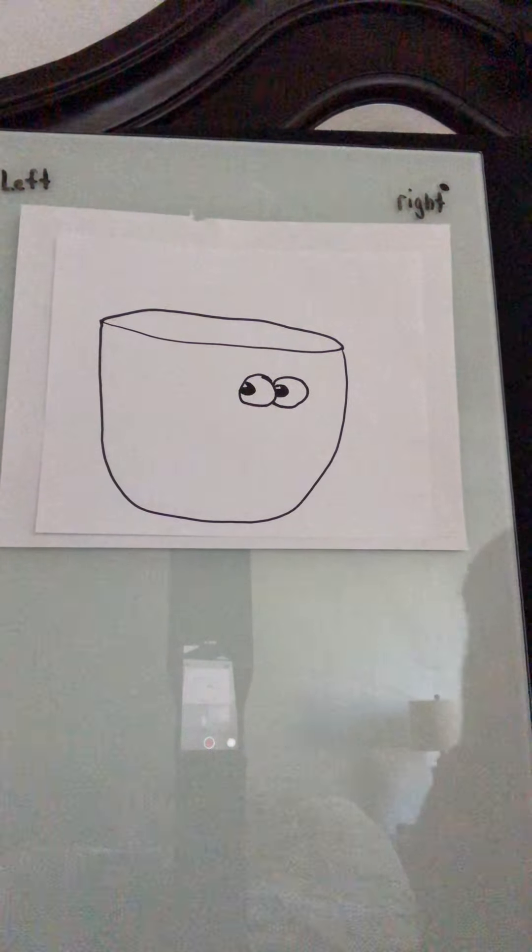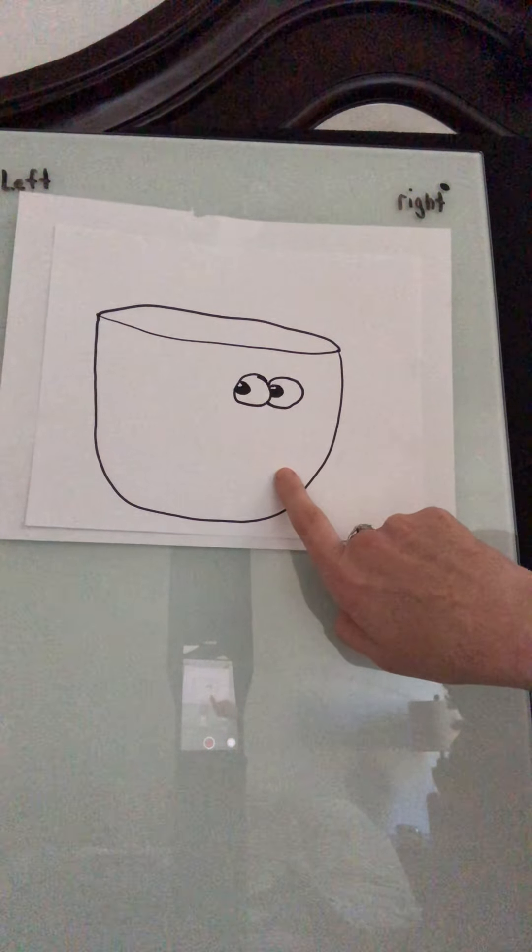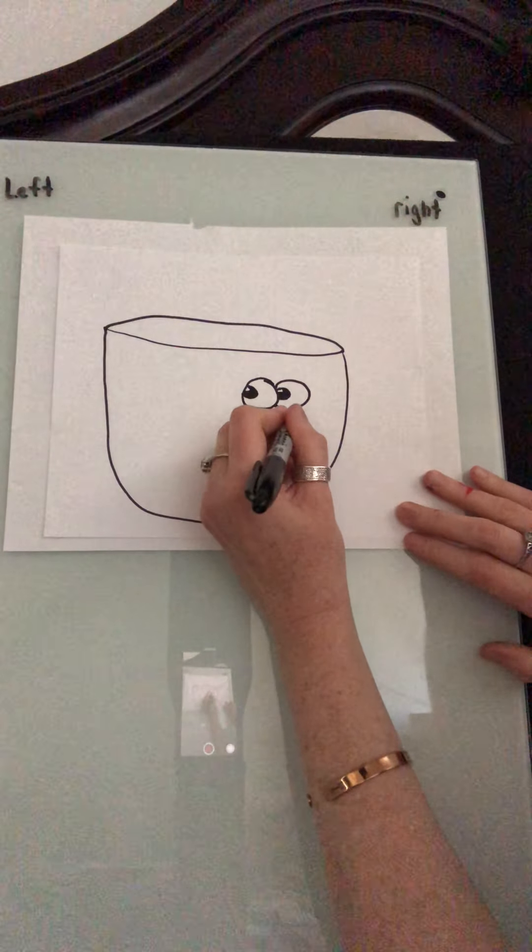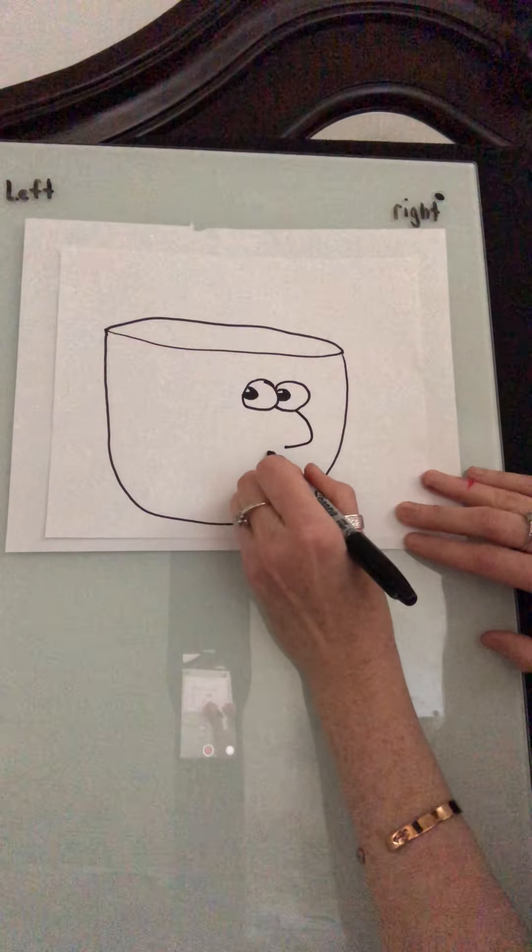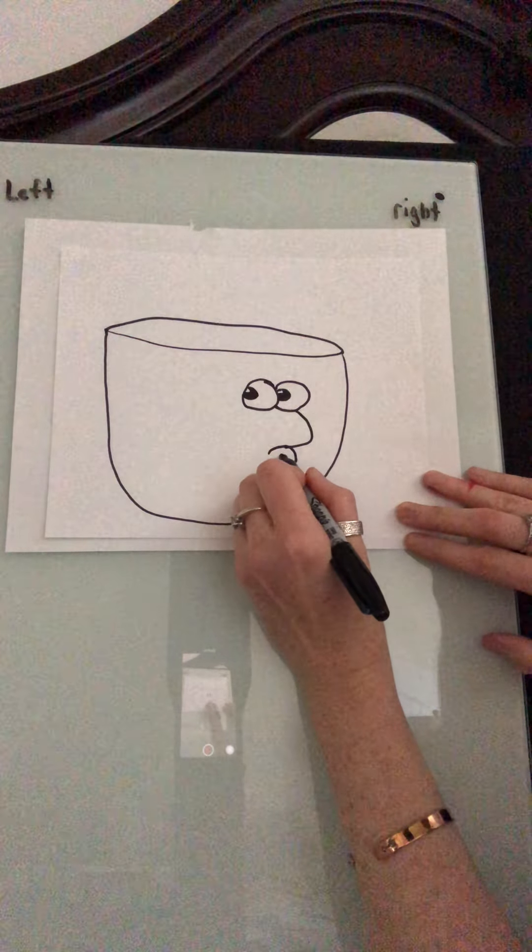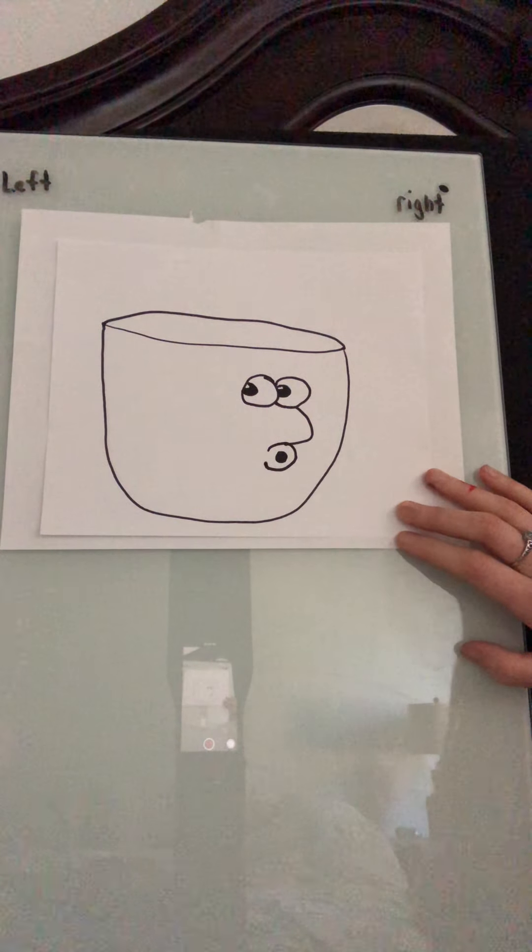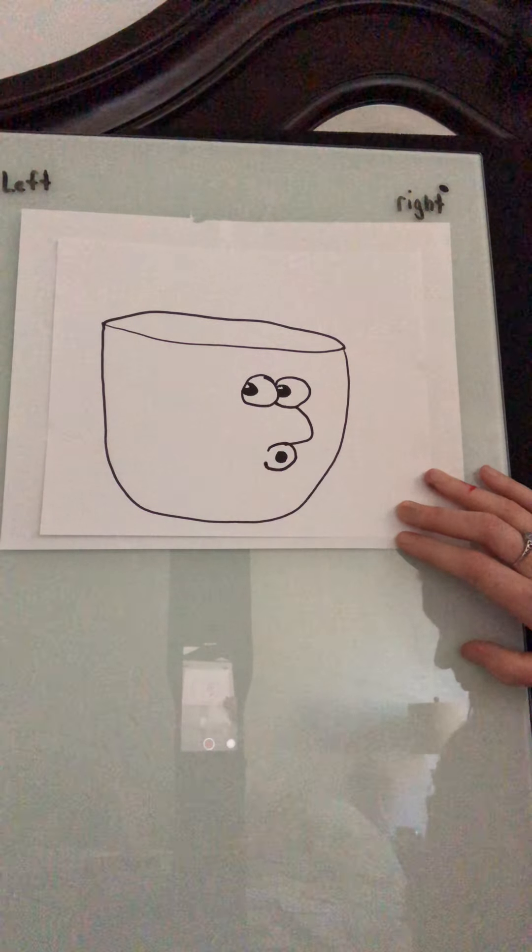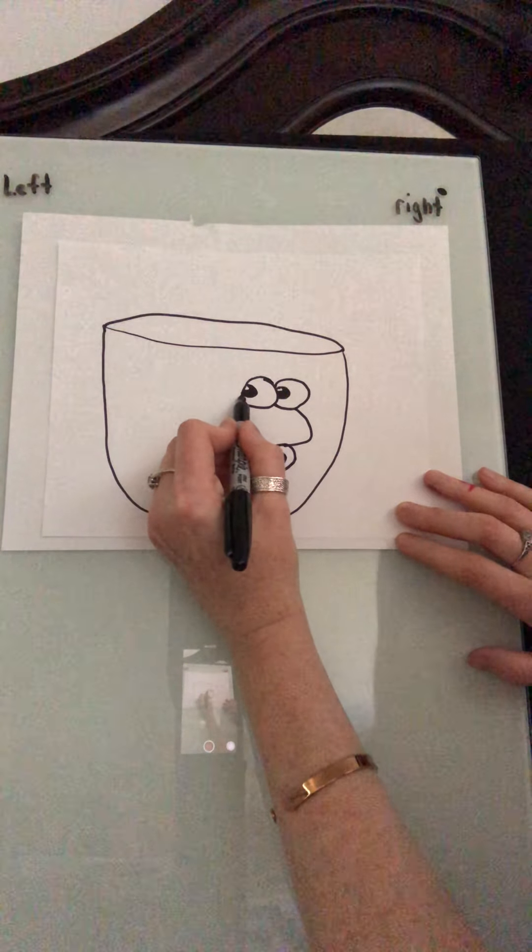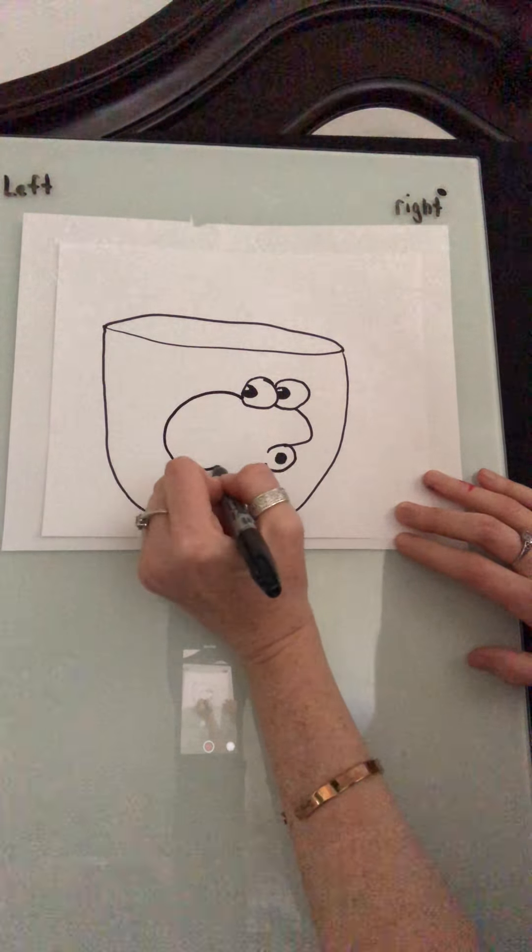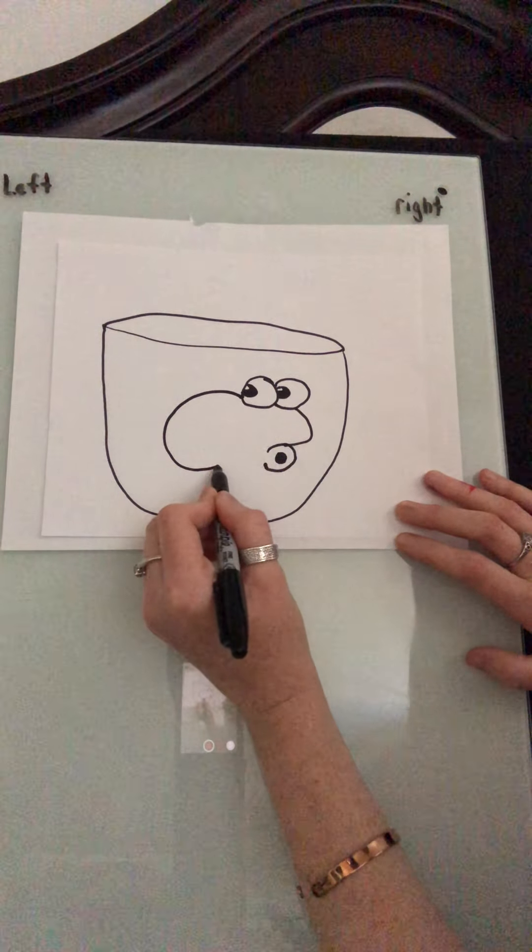The second thing he did was go around and do the front of the fish. So I think he went down something like this, and then he did a backward C. Inside he did a circle and colored it in. Then he went back and he did the back of the fish, and down here we're going to have a fin.